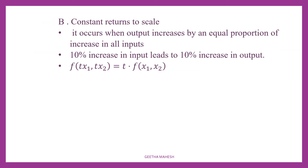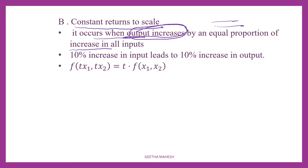The second stage is constant returns to scale. Constant returns to scale occurs when output increases in equal proportion to the increase in all inputs. So a 10% increase in input leads to a 10% increase in output. This we call constant returns to scale.